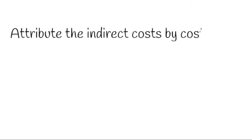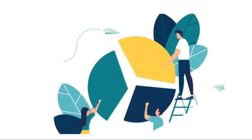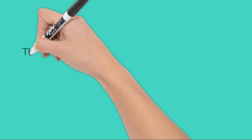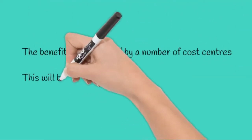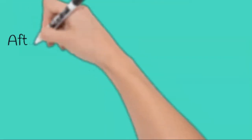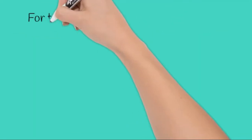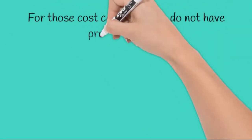As you can see this has been based on cost units so this element is known as absorption costing. Once we've completed these steps we can move on to secondary cost apportionment. For those cost centres which don't have production units we call those service departments and they also require further apportionment of the costs to the different production cost centres.